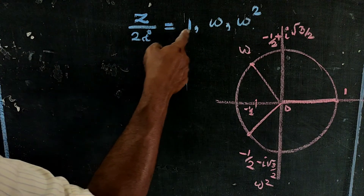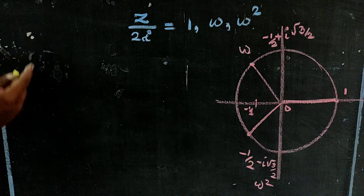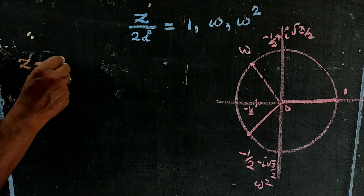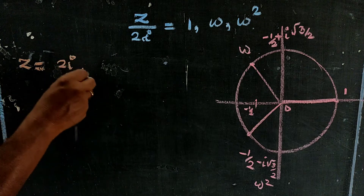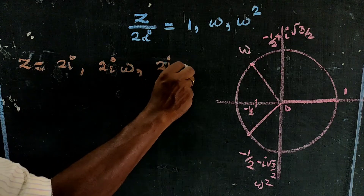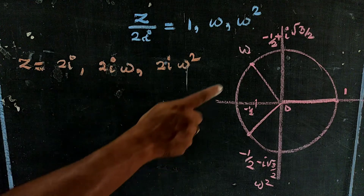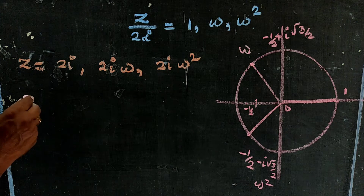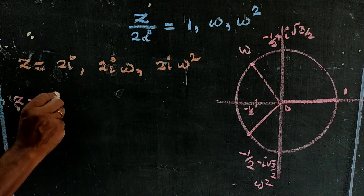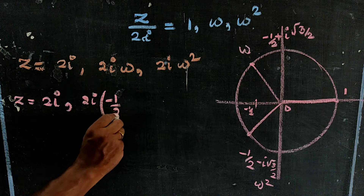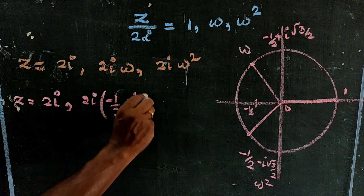So Z by 2y equals 1, omega, or omega square. You can multiply by 2y. Z is equal to 1 into 2y, 2y into omega, or 2y into omega square. Substituting the values: Z is equal to 2y.